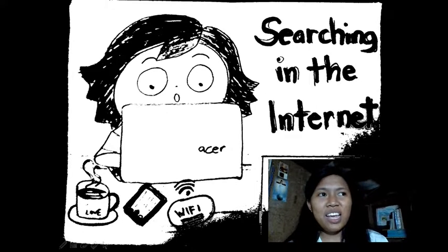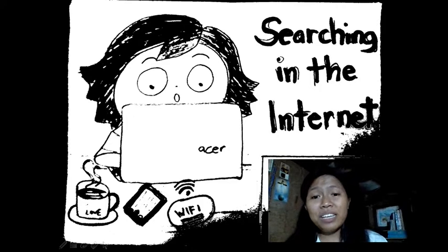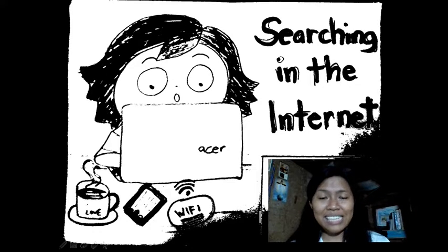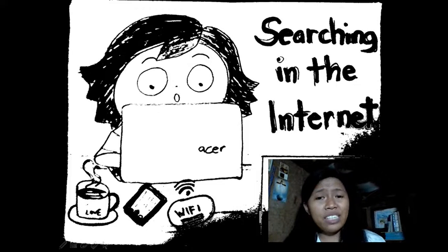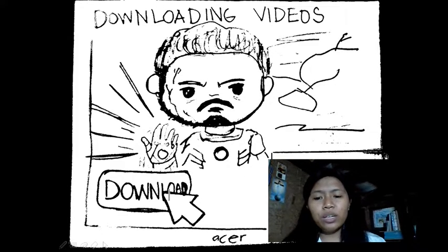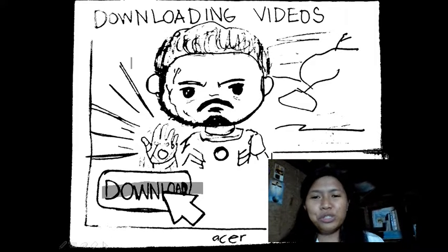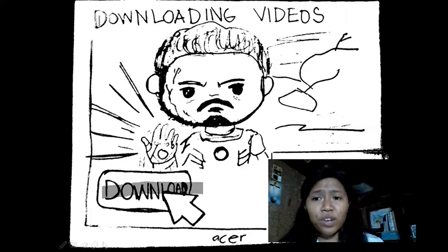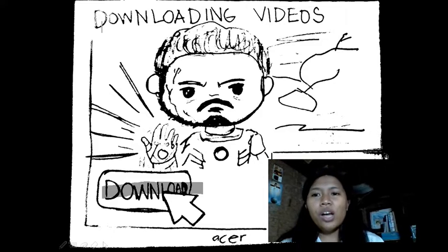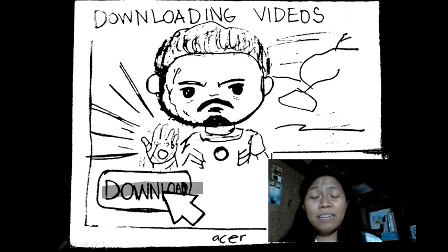Imagine what would happen if each device didn't have an IP address — some information might be sent to the wrong device. So it's risky. IP address is also used in downloading. When you click download, for example downloading videos from YouTube, your IP address is needed so your downloads are received by the right device you are using.